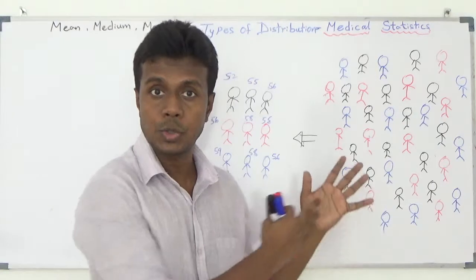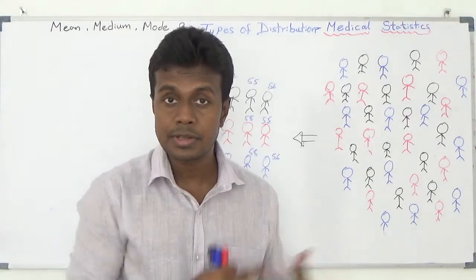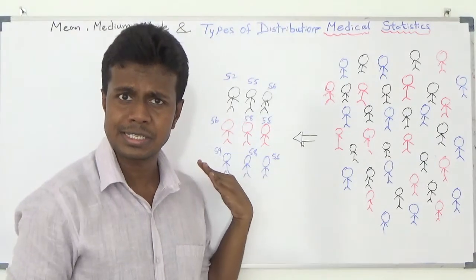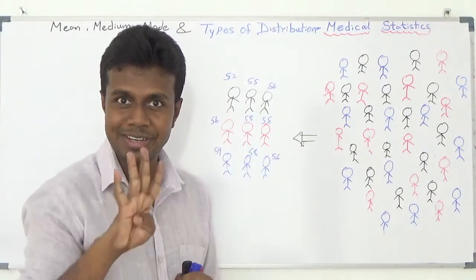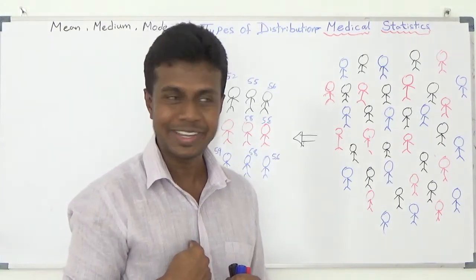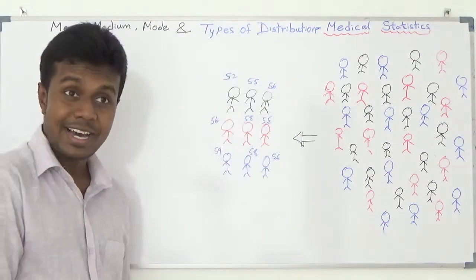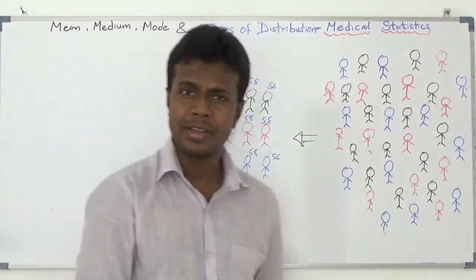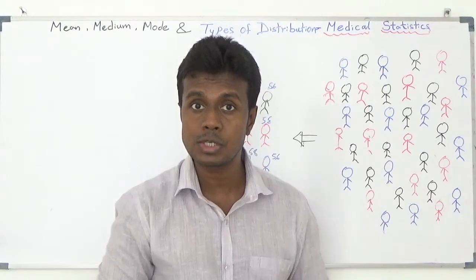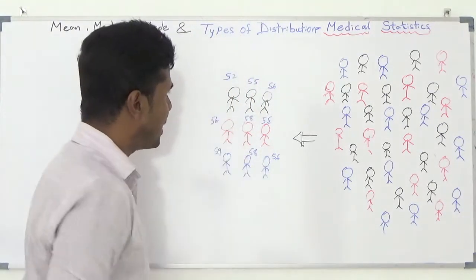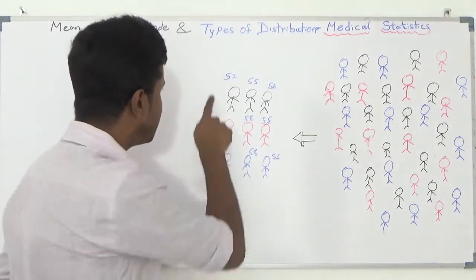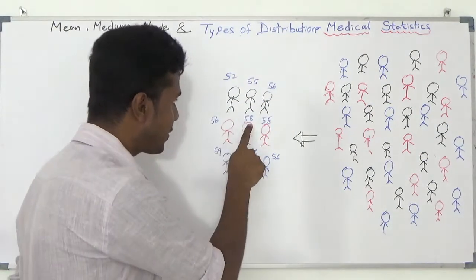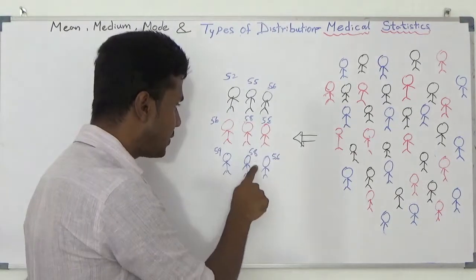For that, I took three red guys, three black guys, and three blue guys — nine individuals total. I am going to ask: what is your age? The ages given are: 52, 55, 56, 55, 59, 58, 56, 58, and 56.